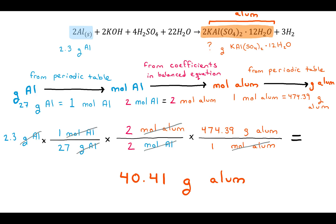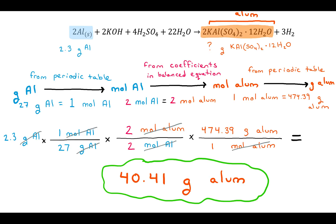To plug this into a calculator safely, press enter after every step: type 2.3 × 1, enter; ÷ 27, enter; × 2, enter; ÷ 2, enter; × 474.39, enter; ÷ 1, enter. If you try to enter all numbers at once, the order of operations may give the wrong answer, so do one step at a time. That gives you the theoretical yield — if every atom in those 2.3 grams of aluminum reacted and nothing was lost, you would get 40.41 grams of alum.